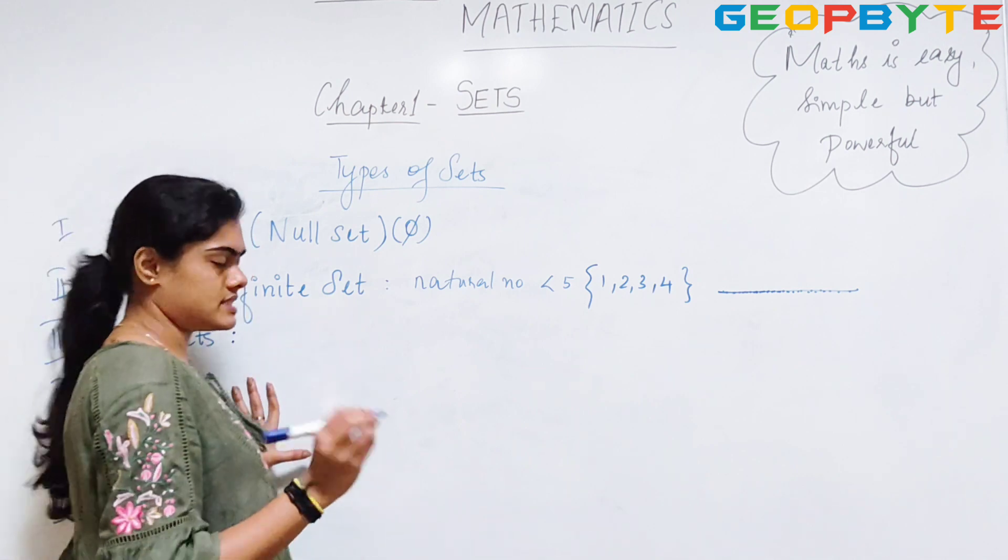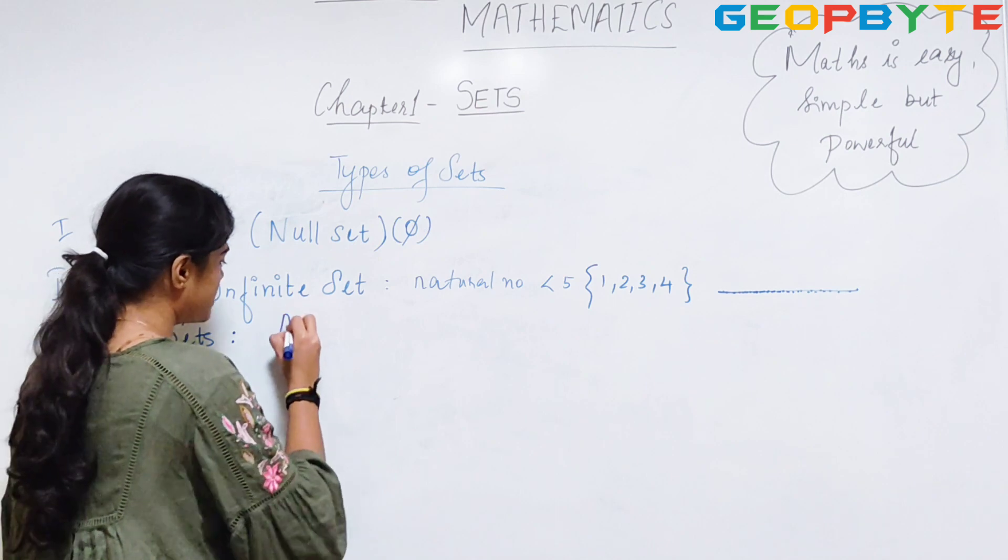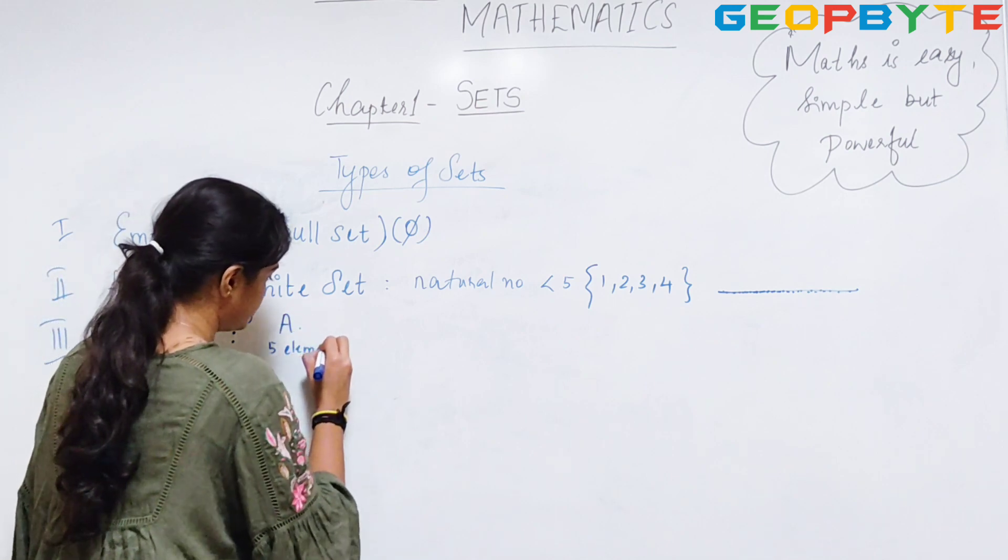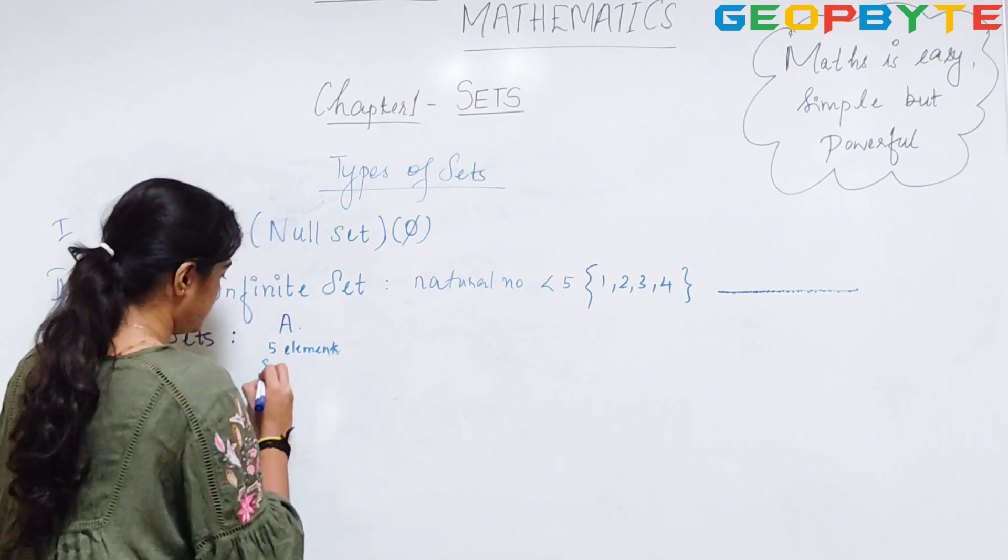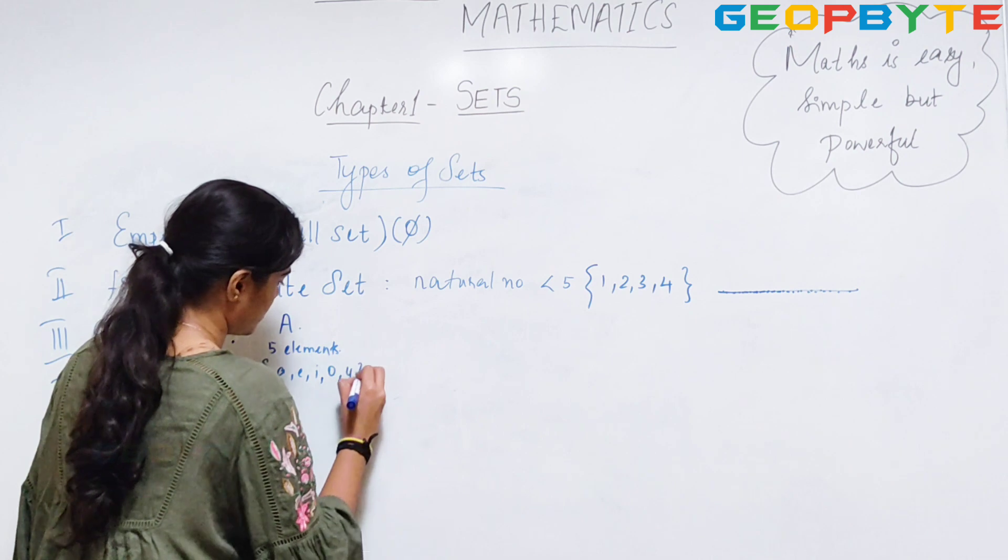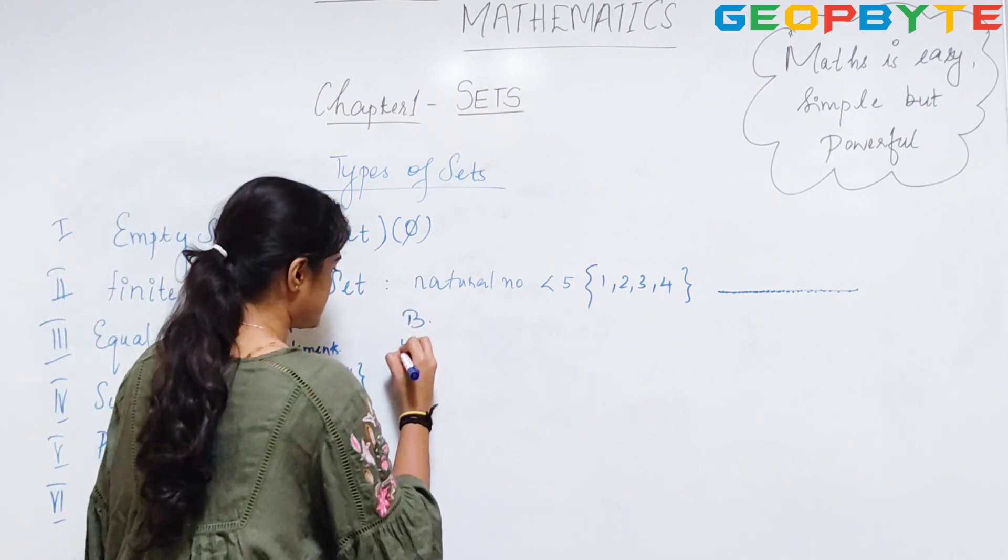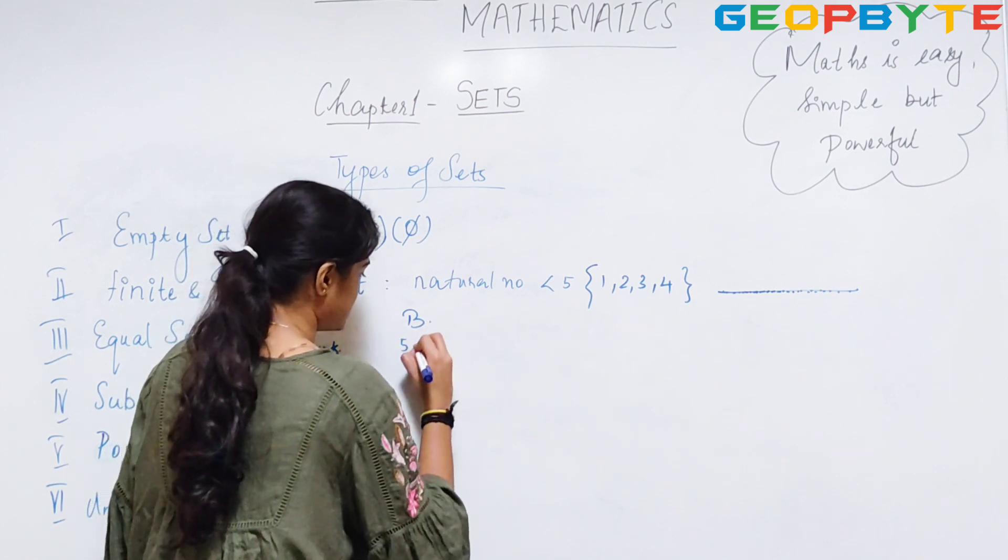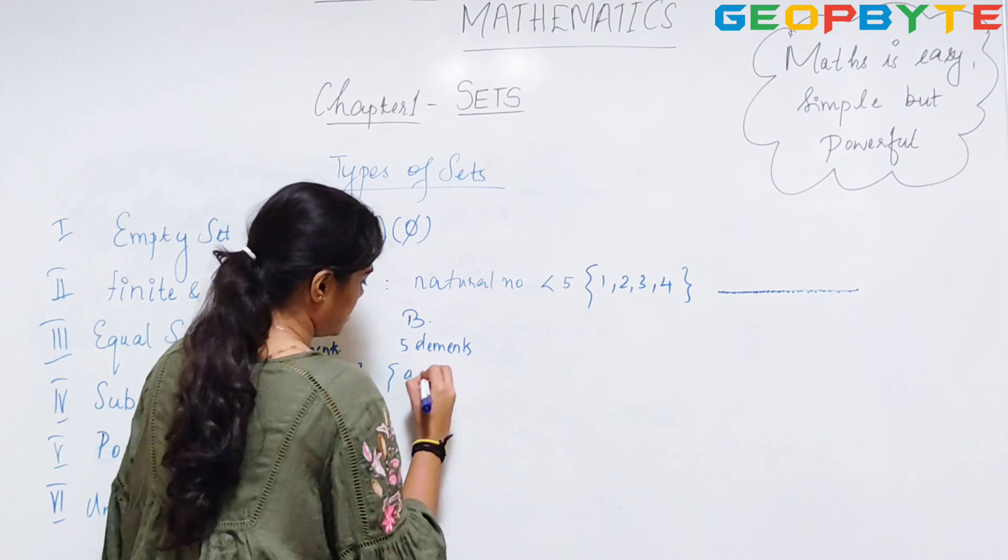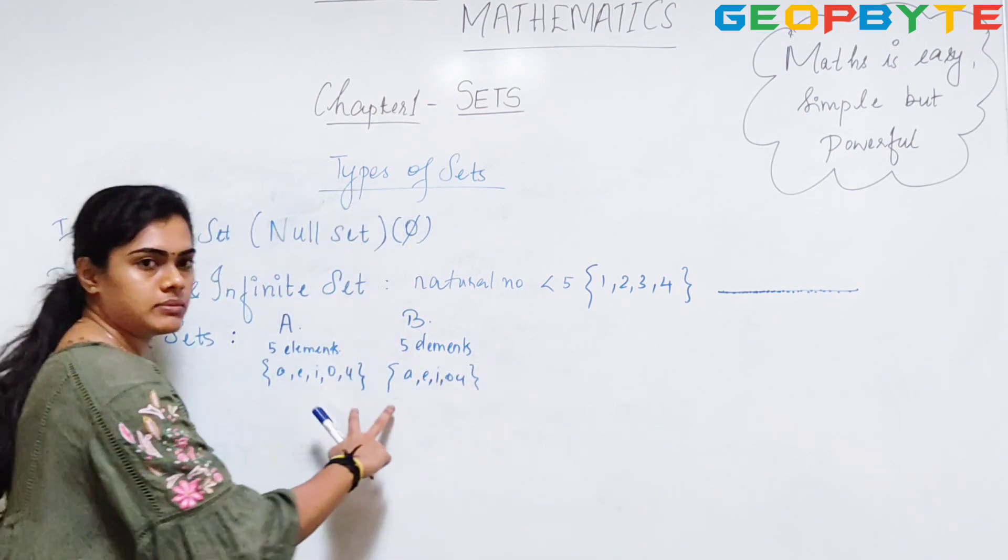Another one is equal sets. Equal sets means if set A contains 5 elements, if they are A, E, I, O, U, and my B set also contains 5 elements A, E, I, O, U, then their elements are equal. Then that is my equal sets.